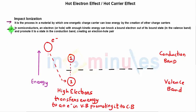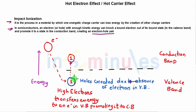In semiconductors, an electron with enough kinetic energy can knock a bound electron out of its bound state. An electron moving with very high kinetic energy can knock an electron from the valence band up into the conduction band. This creates an absence of electron in the valence band — a hole — so an electron-hole pair is generated.